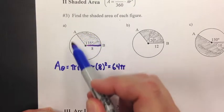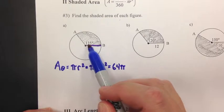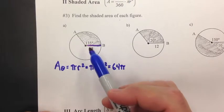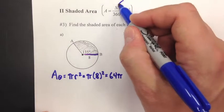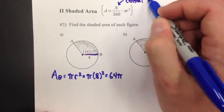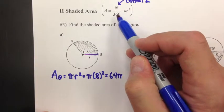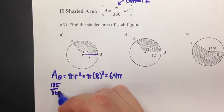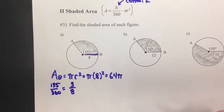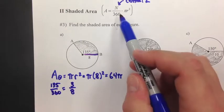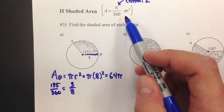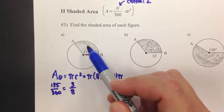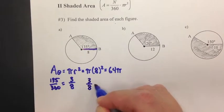That's for the whole circle, but we don't want the whole circle — we want a fraction of it, only this 135-degree section. To find the fraction, I take the central angle n and divide by 360, so that's 135 divided by 360, which is 3 over 8. Then I take that fraction and multiply it by the overall area. When you take a fraction of something it means you multiply, so for the shaded portion I take 3/8 times the area.